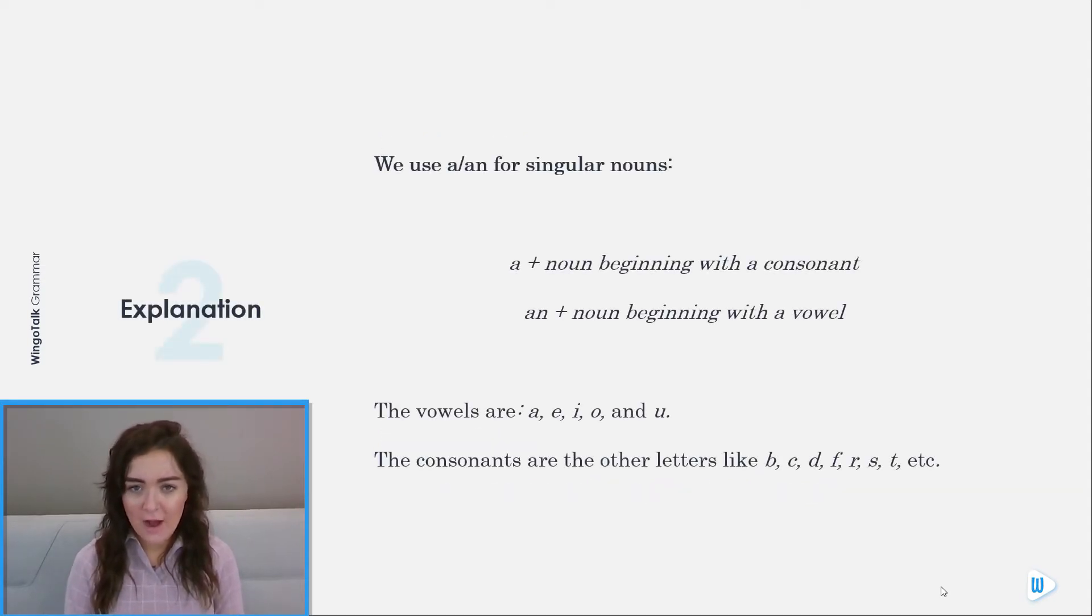We use a or an for singular nouns. A plus noun beginning with a consonant, or an plus noun beginning with a vowel. The vowels are a, e, i, o, and u. The consonants are the other letters like b, c, d, f, r, s, etc.